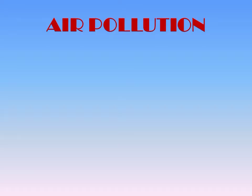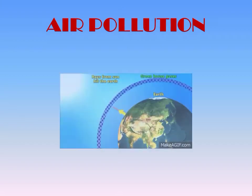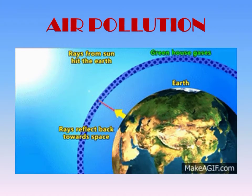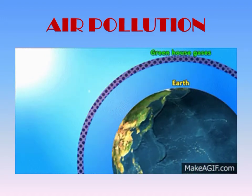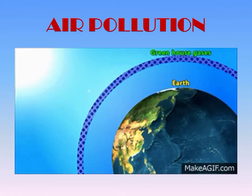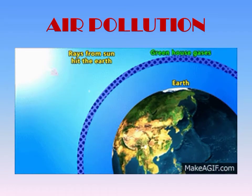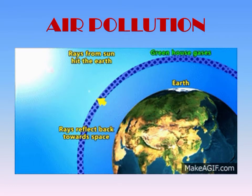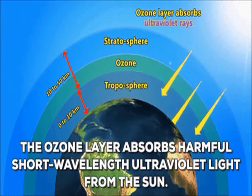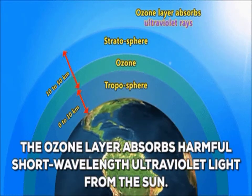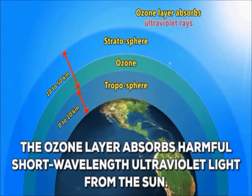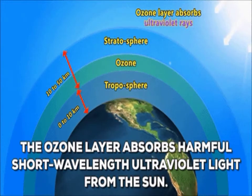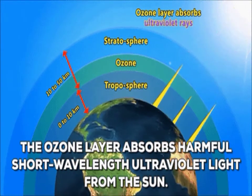Let's understand air pollution through this phenomenon. The atmosphere is composed of different gases which envelop our earth. This envelope of gases is known as the ozone layer. The ozone layer protects us from the harmful portion of incoming solar radiation and also keeps the thermal balance of our planet.